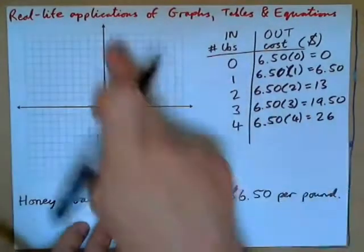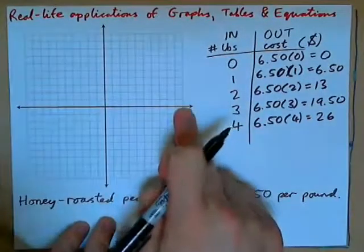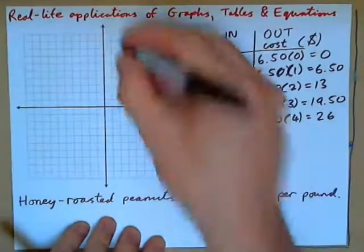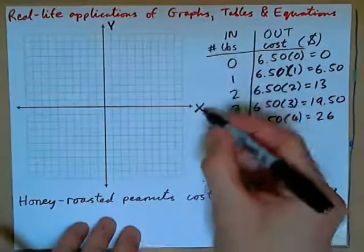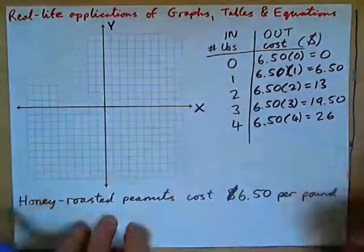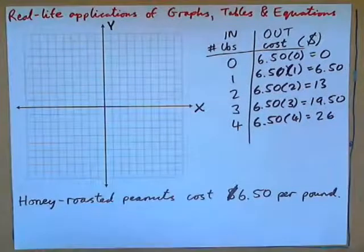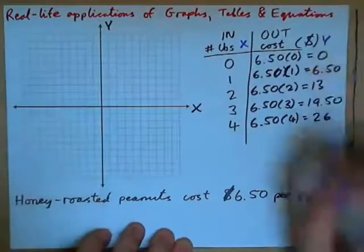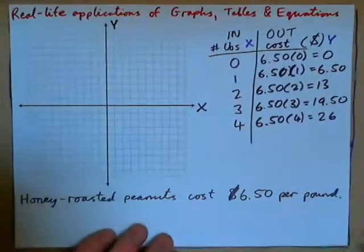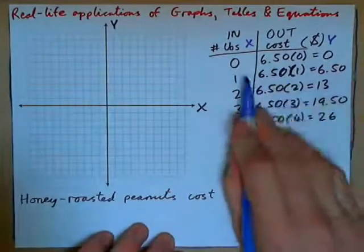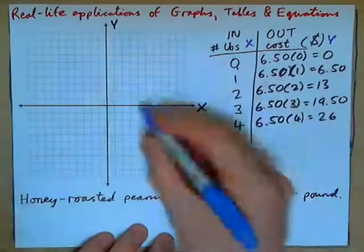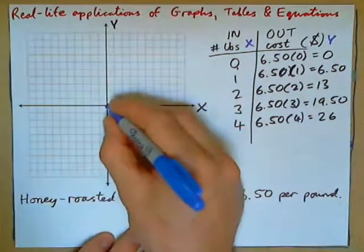Now we're going to put this on a graph — an XY graph. The X is always the horizontal axis, Y is always the vertical axis. We always have the input being X and the output being Y — just standard procedure. So the first ordered pair is going to be X is 0, Y is 0.